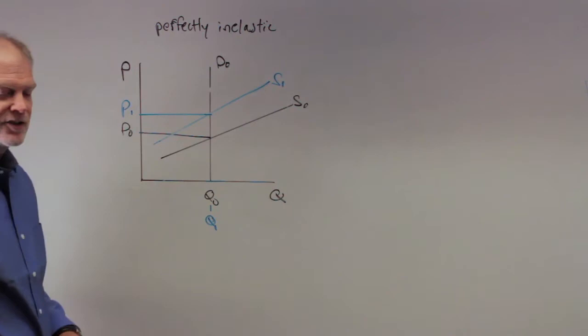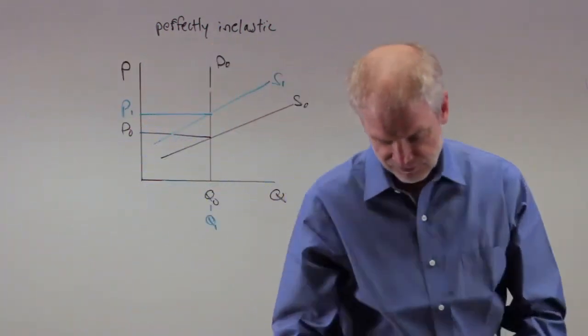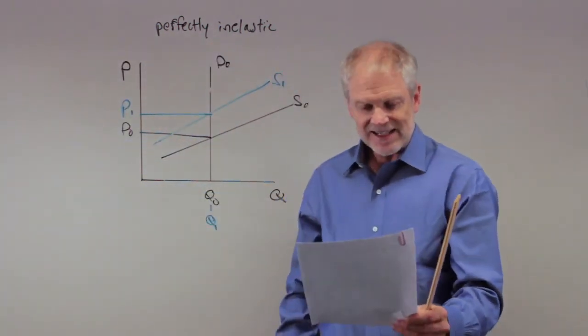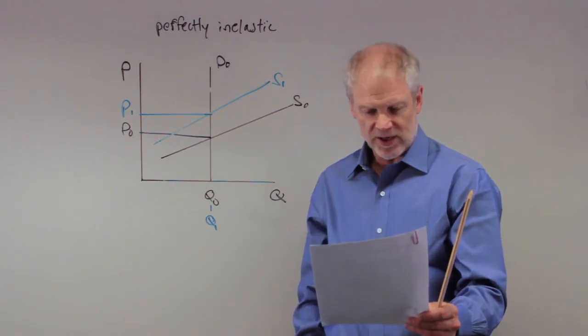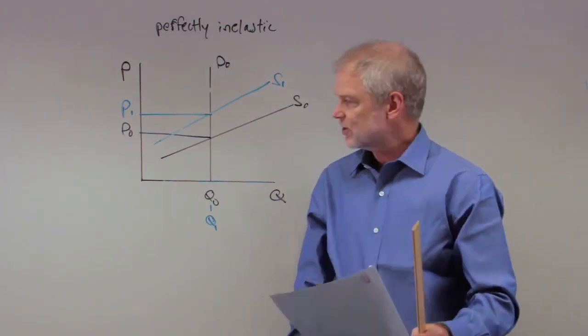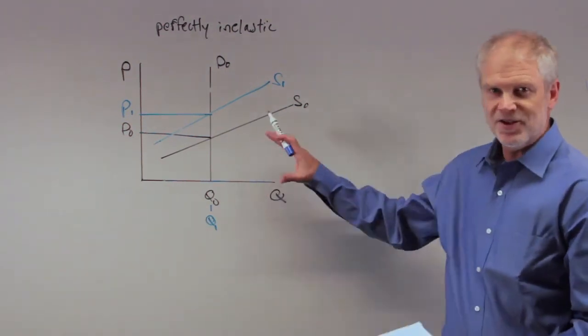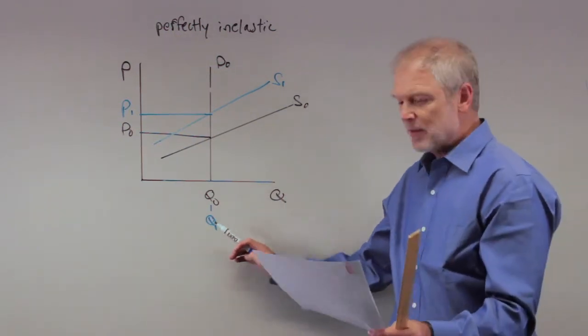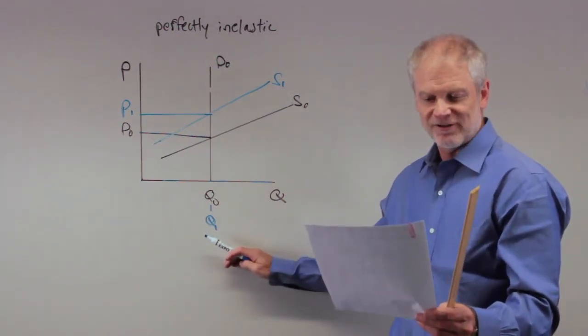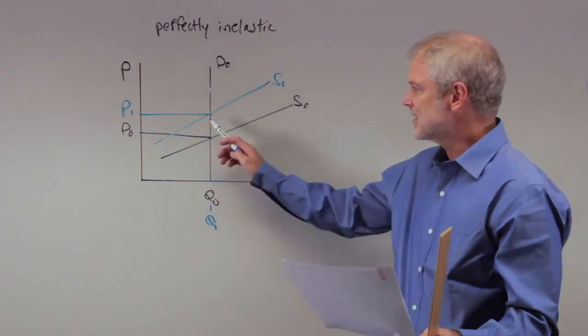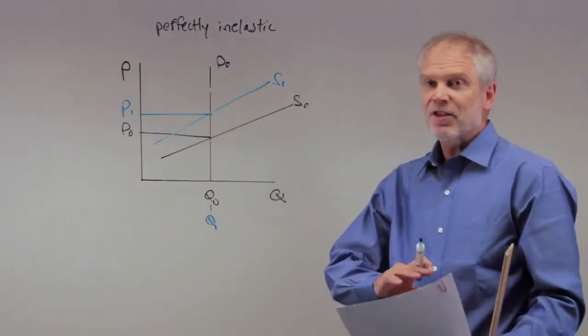Let's run through our answers here. It says the equilibrium quantity decreases and equilibrium price is unchanged. Well because you've drawn this you know that's crazy right? Equilibrium quantity has not changed, it is frozen right there and equilibrium price is unchanged, that's also wrong, so we can throw A out rather quickly.